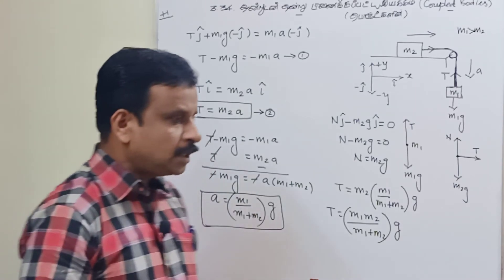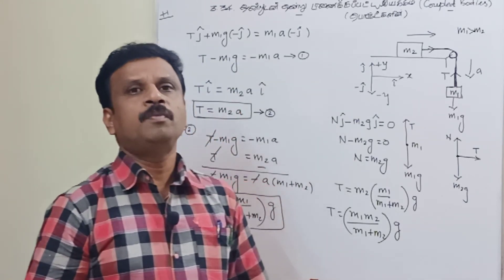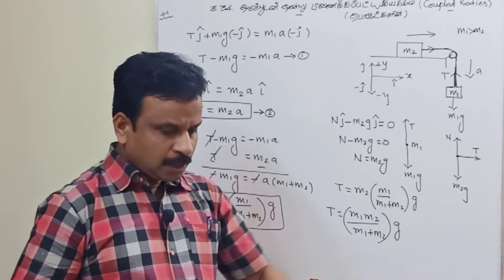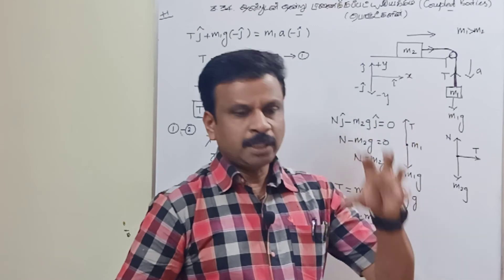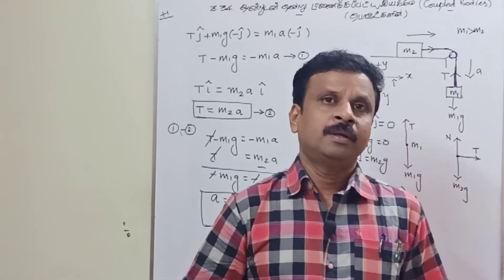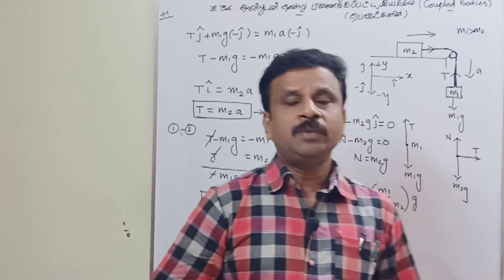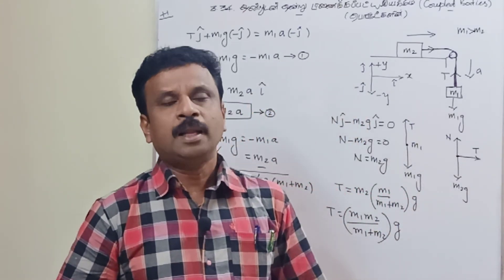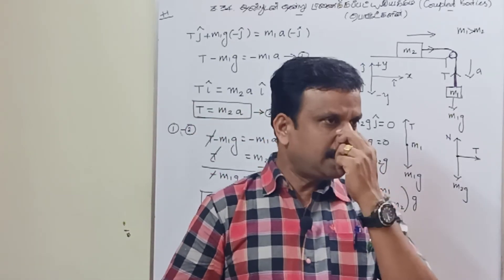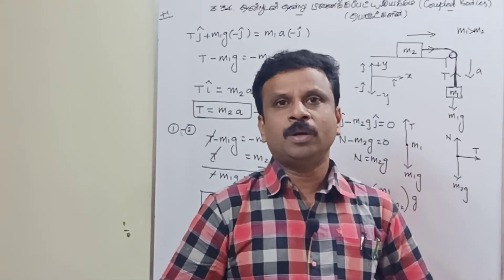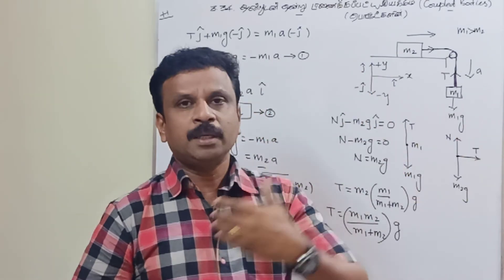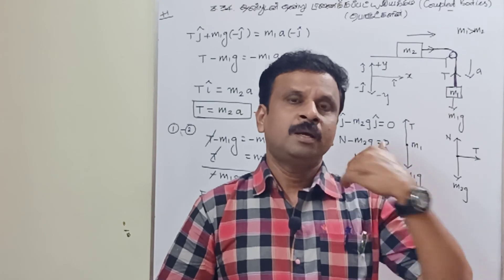In vertical motion the tension along the rope is higher, whereas in horizontal motion the tension is lower because the weight of m2 does not contribute to tension in the horizontal case.